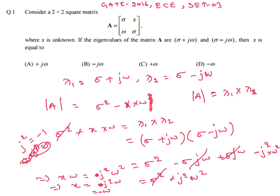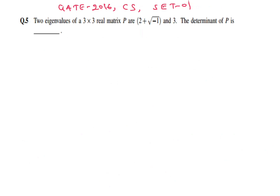This is a Computer Science question Set 1. Two eigenvalues of a 3×3 real matrix P are 2 ± √(−1) and 3. The determinant of P is how much? Since the matrix is real, complex eigenvalues come in conjugate pairs: λ₁ = 2 + i, λ₂ = 3, and λ₃ = 2 − i.